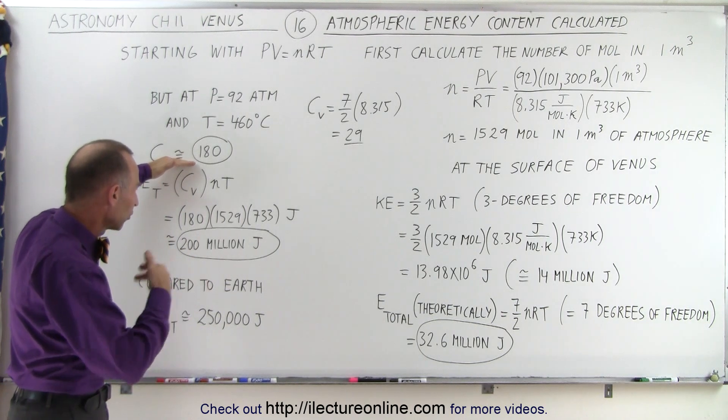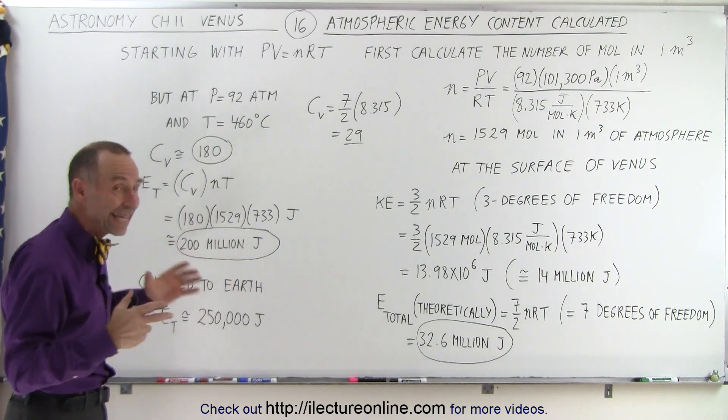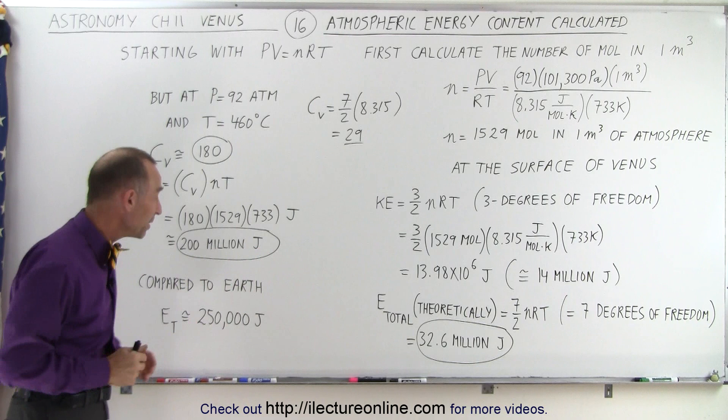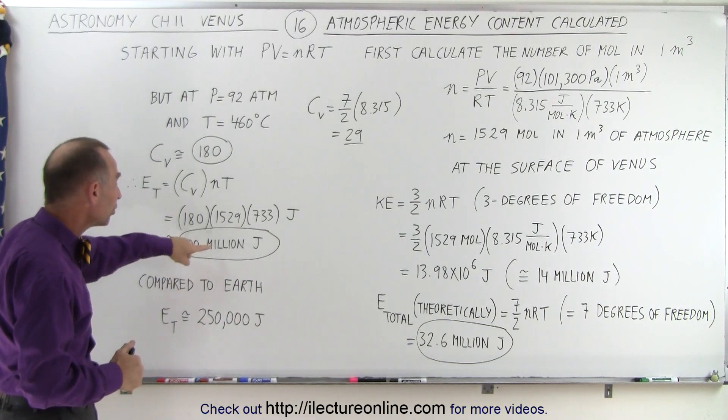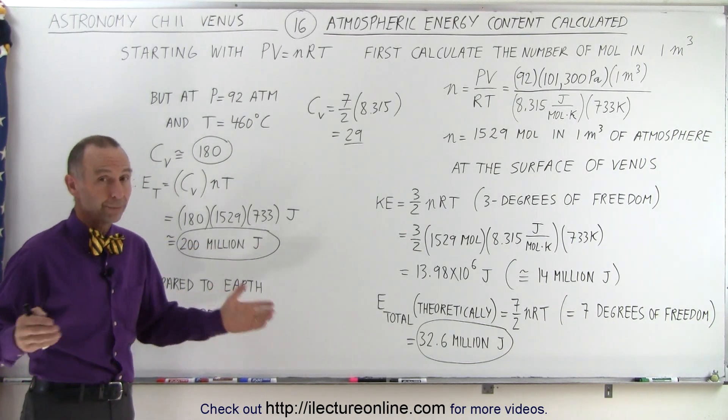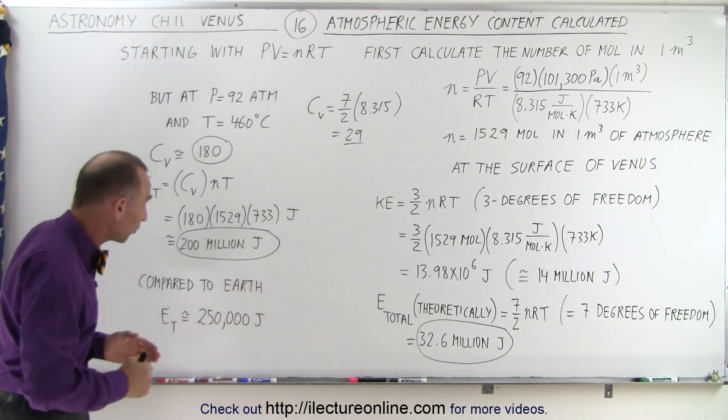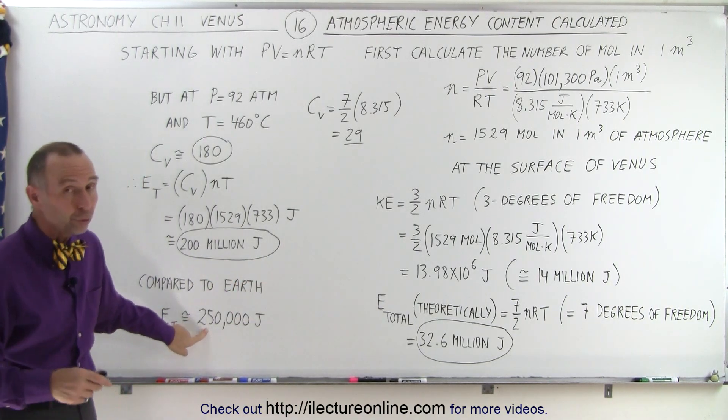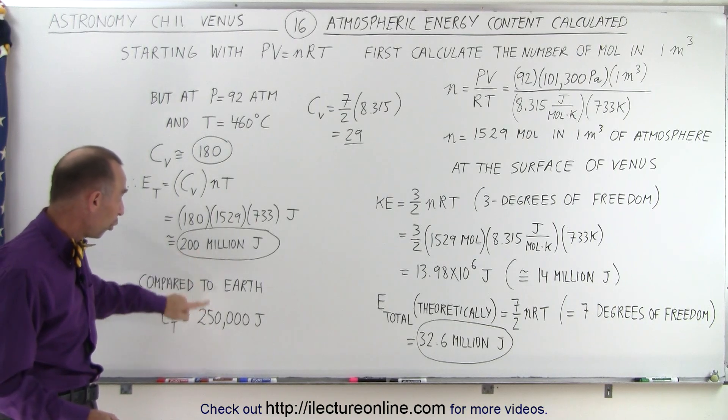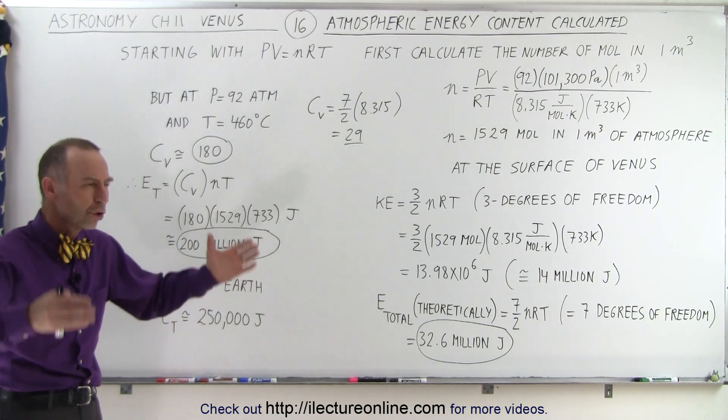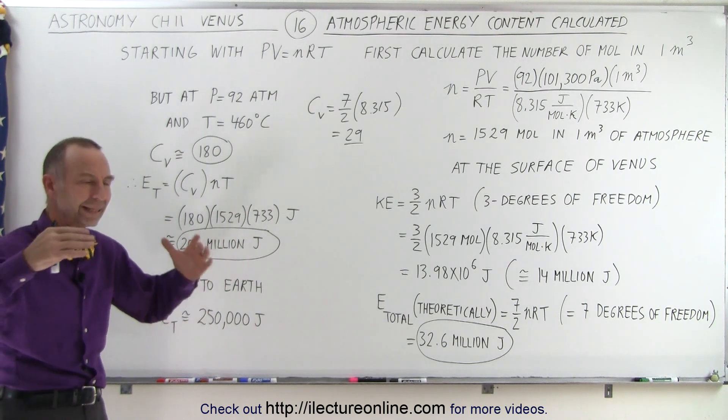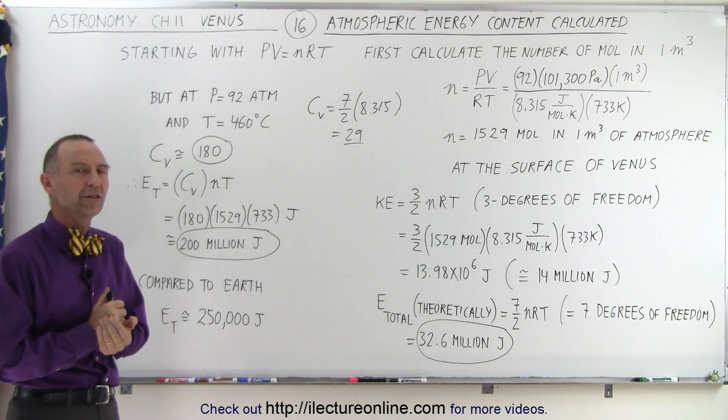And so when we use that value, which is much closer to what we would expect on the surface of Venus, the amount of heat contained within one cubic meter of atmosphere is 200 million joules, compared to the amount of energy contained within one cubic meter of atmosphere on the Earth's surface, is about 250,000 joules. That's almost a thousand times as much. There's an enormous amount of heat that's contained within the atmosphere of Venus.